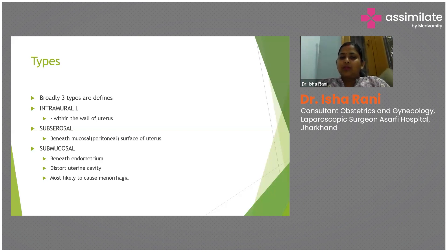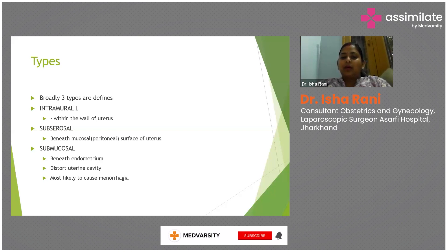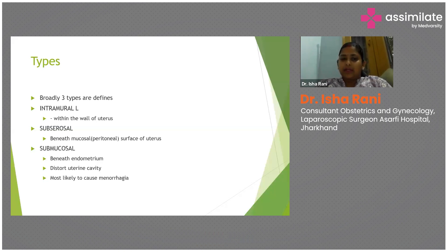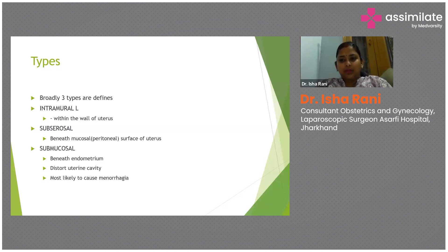Intramural fibroids are located within the uterine wall. Subserosal fibroids are on the peritoneal surface and submucosal fibroids are beneath the endometrium, often distorting the uterine cavity and most commonly causing menorrhagia. In practice, subserosal fibroids do not cause menorrhagia — they cause pressure symptoms or pain and are often asymptomatic. Submucosal fibroids are the most notorious, increasing endometrial surface area and causing menorrhagia.